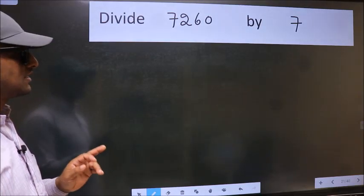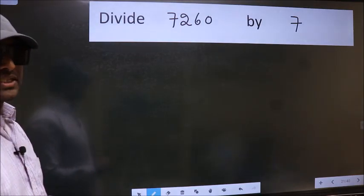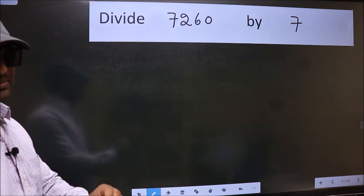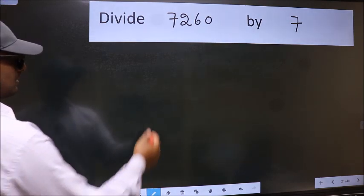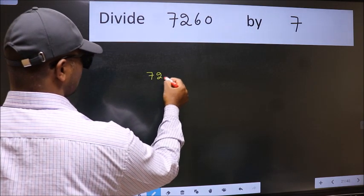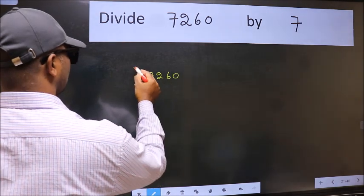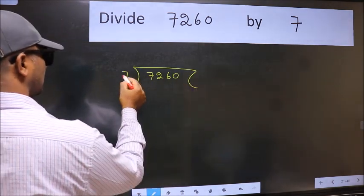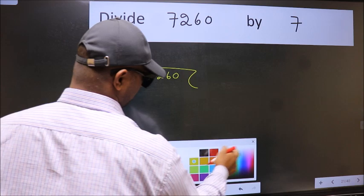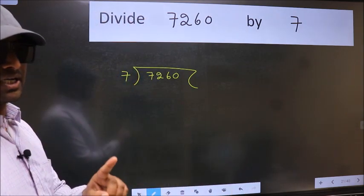Divide 7260 by 7. To do this division, we should frame it in this way: 7260 and 7 here. This is your step 1.